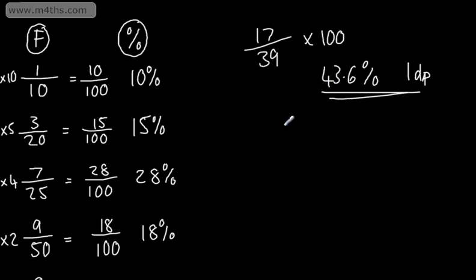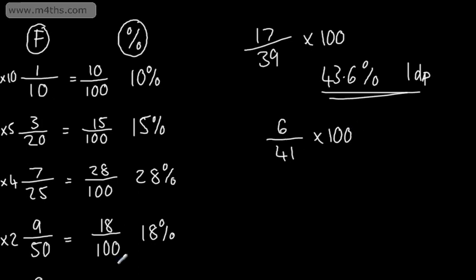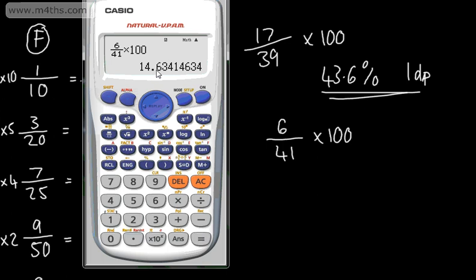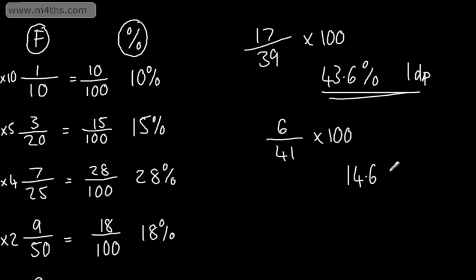Let's say we had 6 out of 41 in a test. All we do is put this in the calculator and multiply by 100 to convert it to a percentage. So 6 over 41 multiplied by 100 gives us 14.6 to 1 decimal place — so 14.6%. All we're doing is finding a decimal equivalent and then multiplying it by 100.